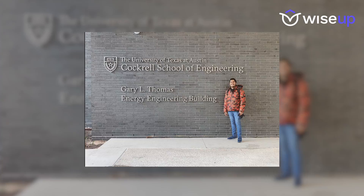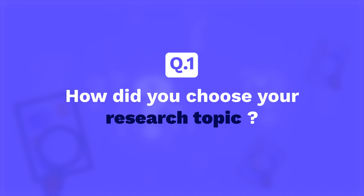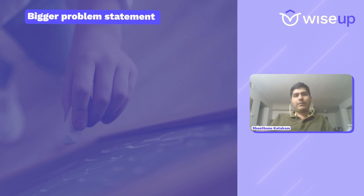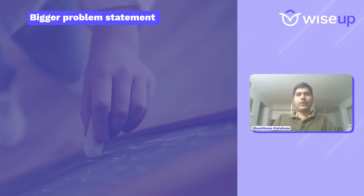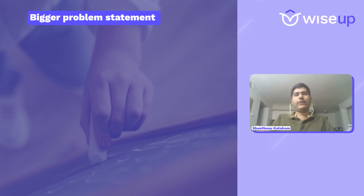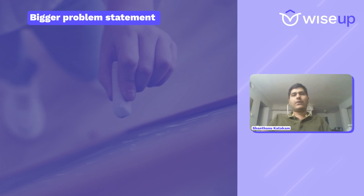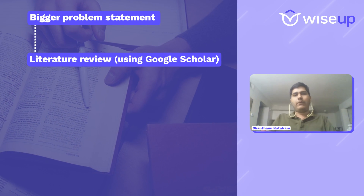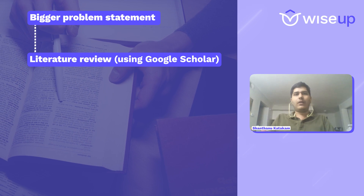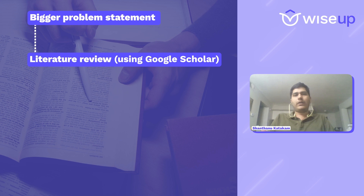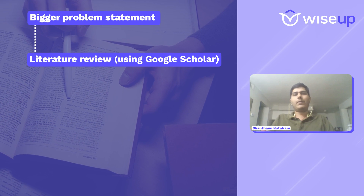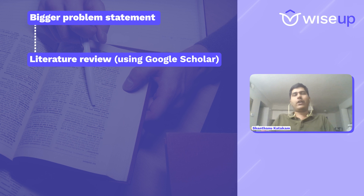So Shantanu, you're studying at UT Austin and you're enrolled in the PhD program. Tell us about your journey — when you joined the program, how did you go about choosing your research topic? Did your professor help you or did you have to narrow it down yourself? Actually, my professor gave me the bigger problem statement that I should be working on. He's working on this problem for converting oil field wastes to green hydrogen. He pitched me that idea and it was pretty interesting. I initially started off with the literature review, where the major chunk involved collecting a lot of papers from Google Scholar by typing in the main keywords that my problem statement involves, which gave me an extensive literature review.